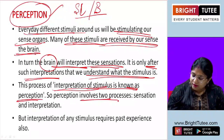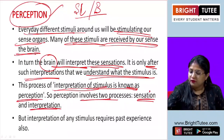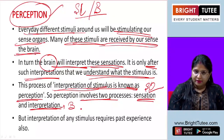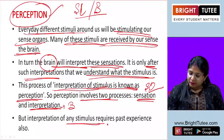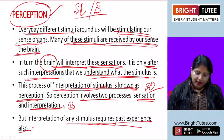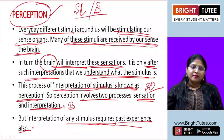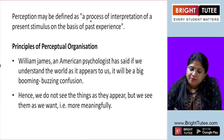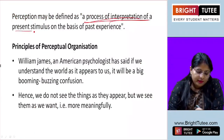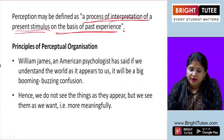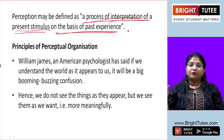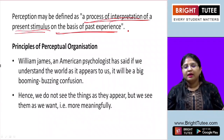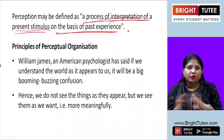This process of interpretation of stimulus is known as perception. Perception involves two processes: sensation and interpretation. First you get the sensation from the sense organs and then the brain interprets it. But interpretation of any stimulus requires past experience also. If the brain does not have the knowledge, perception is not possible. Perception is defined as a process of interpretation of a present stimulus on the basis of past experience. If your brain does not have the knowledge, it will not be able to perceive or interpret, and that sensation will go to waste.